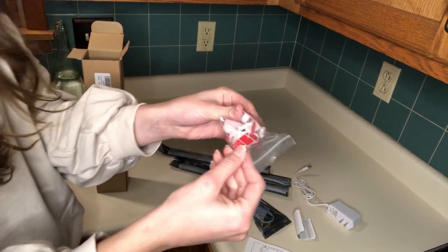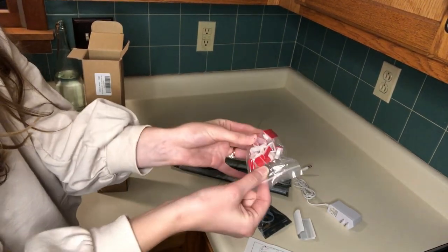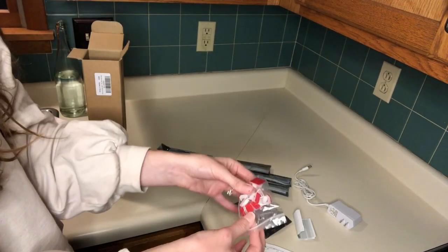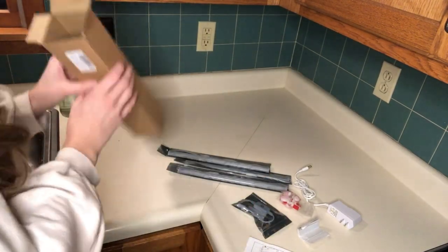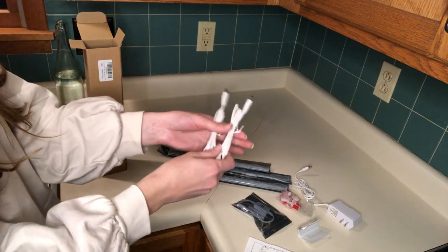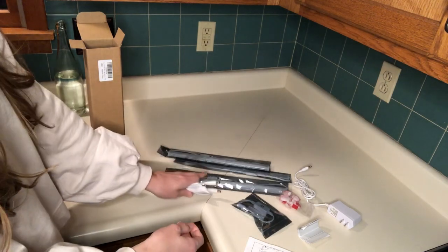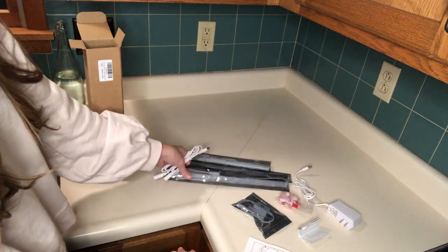And then these are some hooks that you can use to keep the cords up and tucked under the cabinets so that they're not seen from above or the side. And some additional cords to extend the distance between the lights if you want.